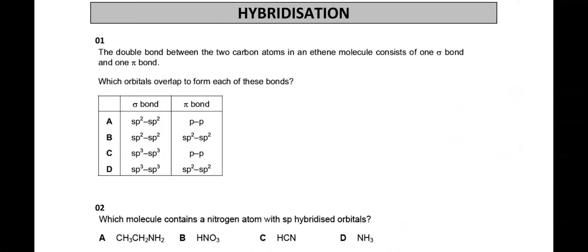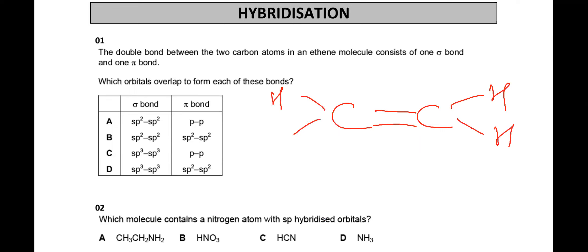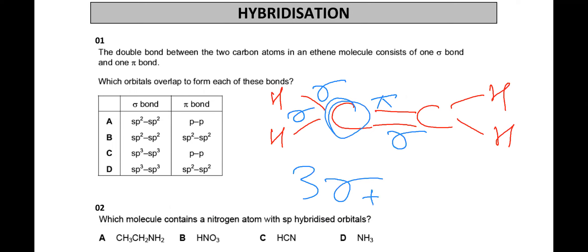In the case of ethene, looking at one carbon atom: it has made 1 sigma, 2 sigma, 3 sigma bonds — so three sigma bonds — and 1 pi bond. Three sigma plus one pi means SP2 hybridization. That is why in option A, the sigma bond is formed by overlapping of two SP2 hybrid orbitals, which is the correct answer.